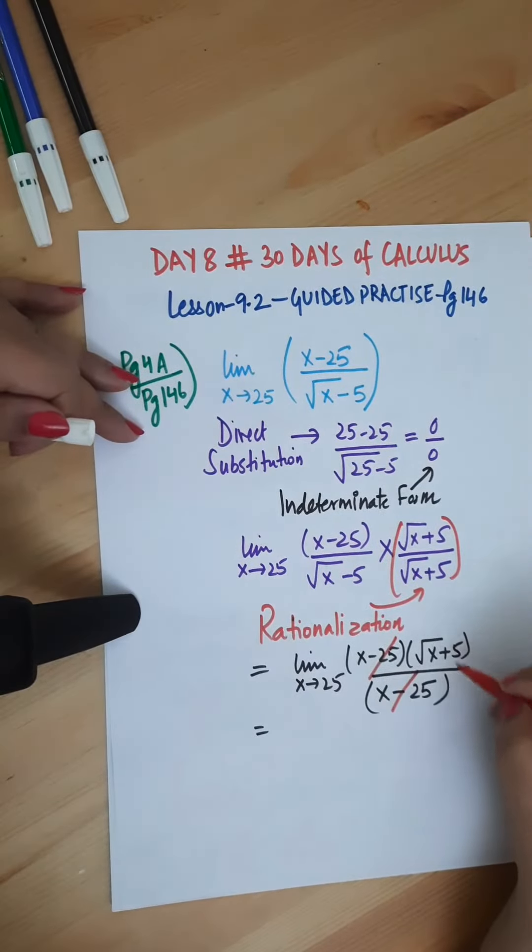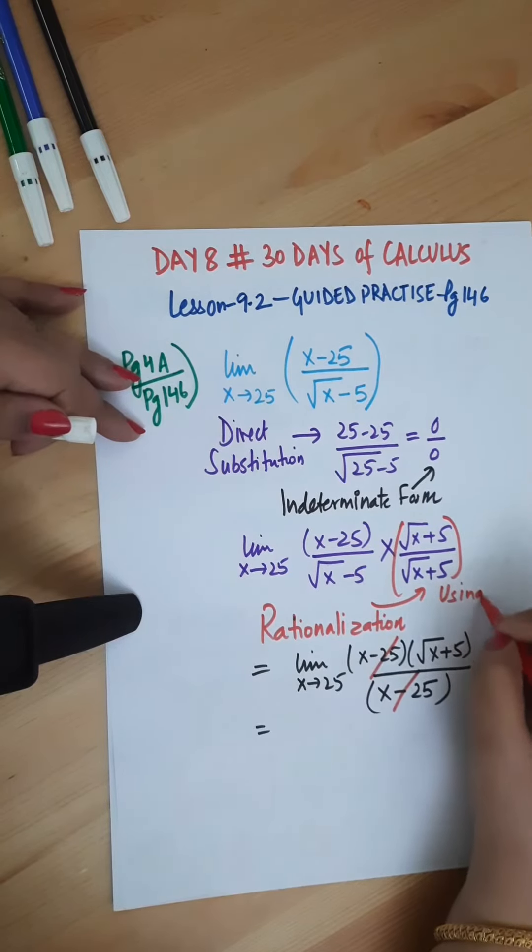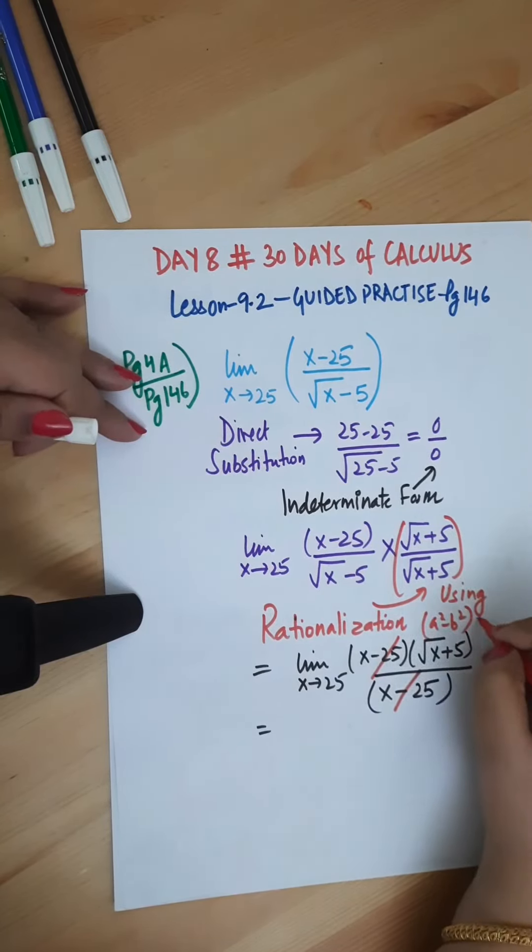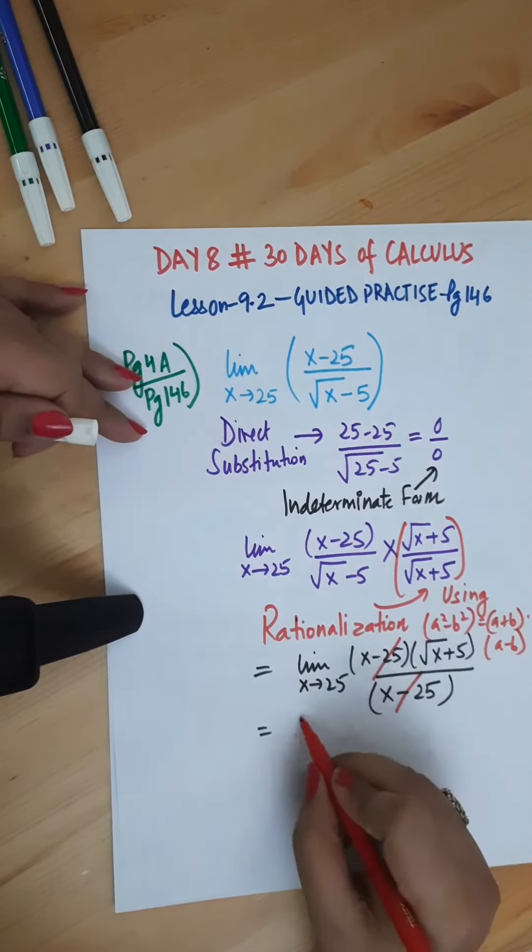And in the denominator we apply a plus b multiplied with a minus b using the algebraic identity of difference of squares. So that is a squared minus b squared, so the denominator is x minus 25.